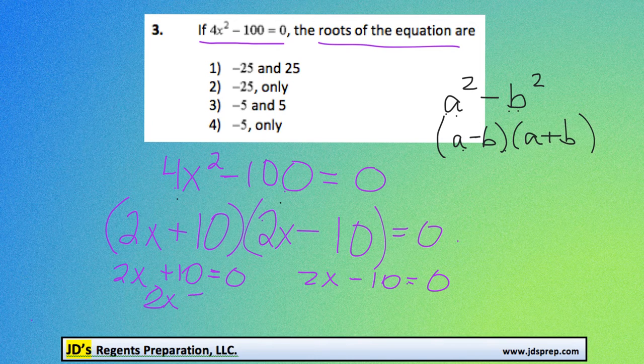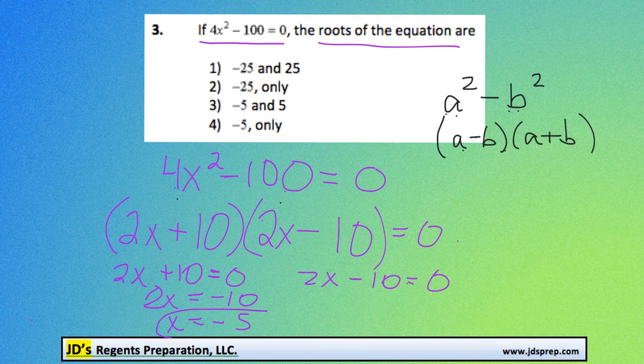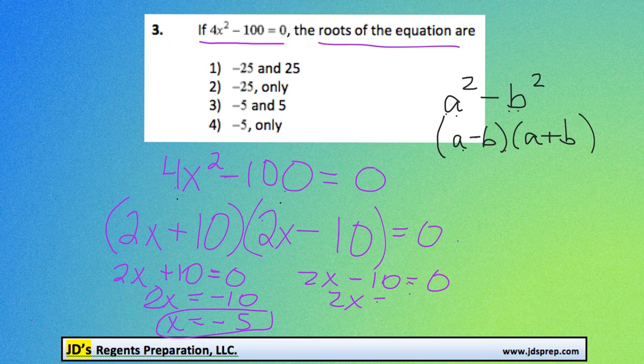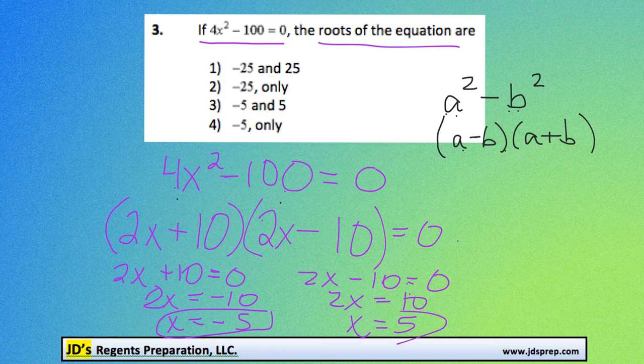Here we get 2x equals negative 10, which means x would equal negative 5. And then on the right here, we'd get 2x equals 10, positive 10, which means that x equals positive 5.